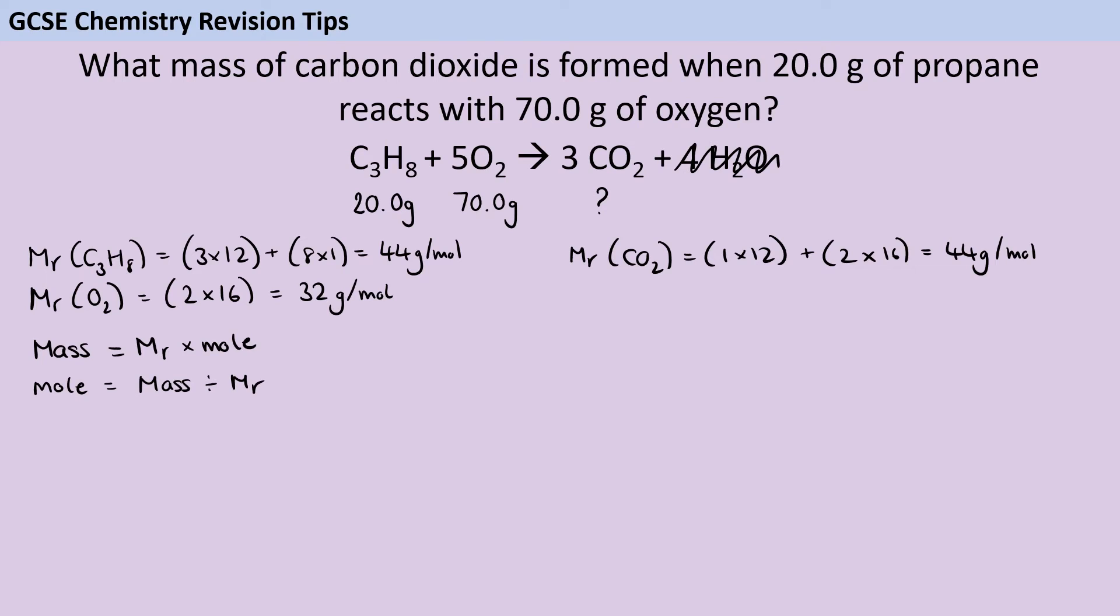So I need to work out the number of moles of both my reactants. I start with propane: 20 divided by 44 gives me 0.45 recurring moles, and I want to use that full calculator display to make sure I'm not rounding early because that could introduce error. Then for oxygen I do 70 divided by 32 and that gives me 2.1875. I'm writing down that full calculator display, not rounding early.